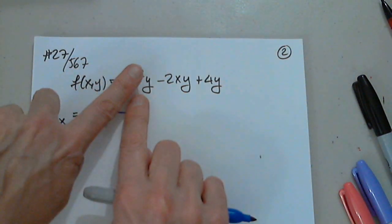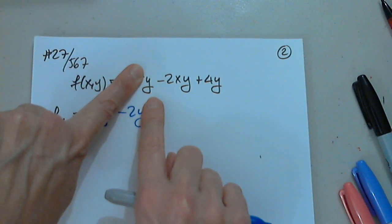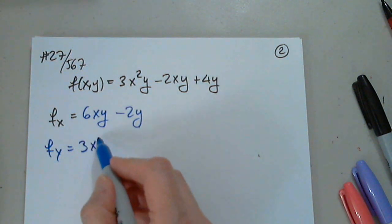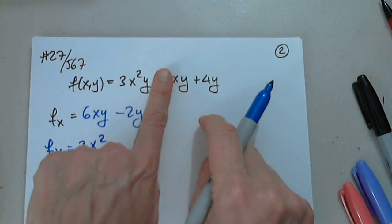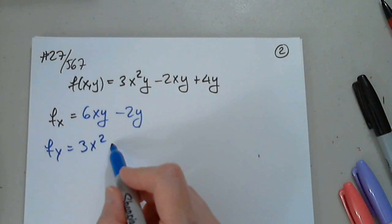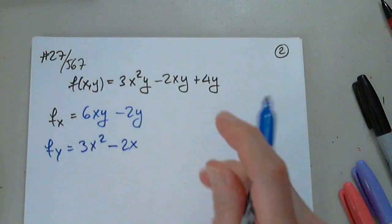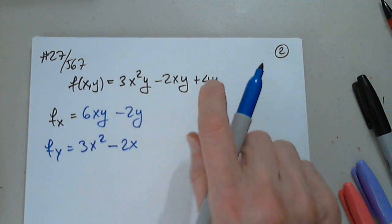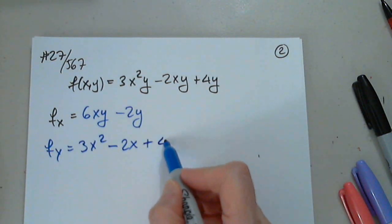fy. We differentiate with respect to y. 3x squared. Very good. We differentiate with respect to y. Minus 2x. 2x. Very good. We differentiate with respect to y. Plus 4. Awesome.